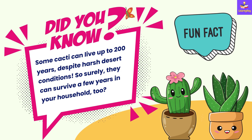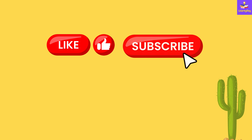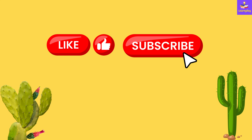Now, coming on to an interesting fun fact on cactus: some cacti can live up to 200 years despite harsh desert conditions. So surely they can survive a few years in your household too. Hope you enjoyed learning about the adaptations of cactus plants. Do like the video and subscribe to LearnyDay for more such knowledge videos.